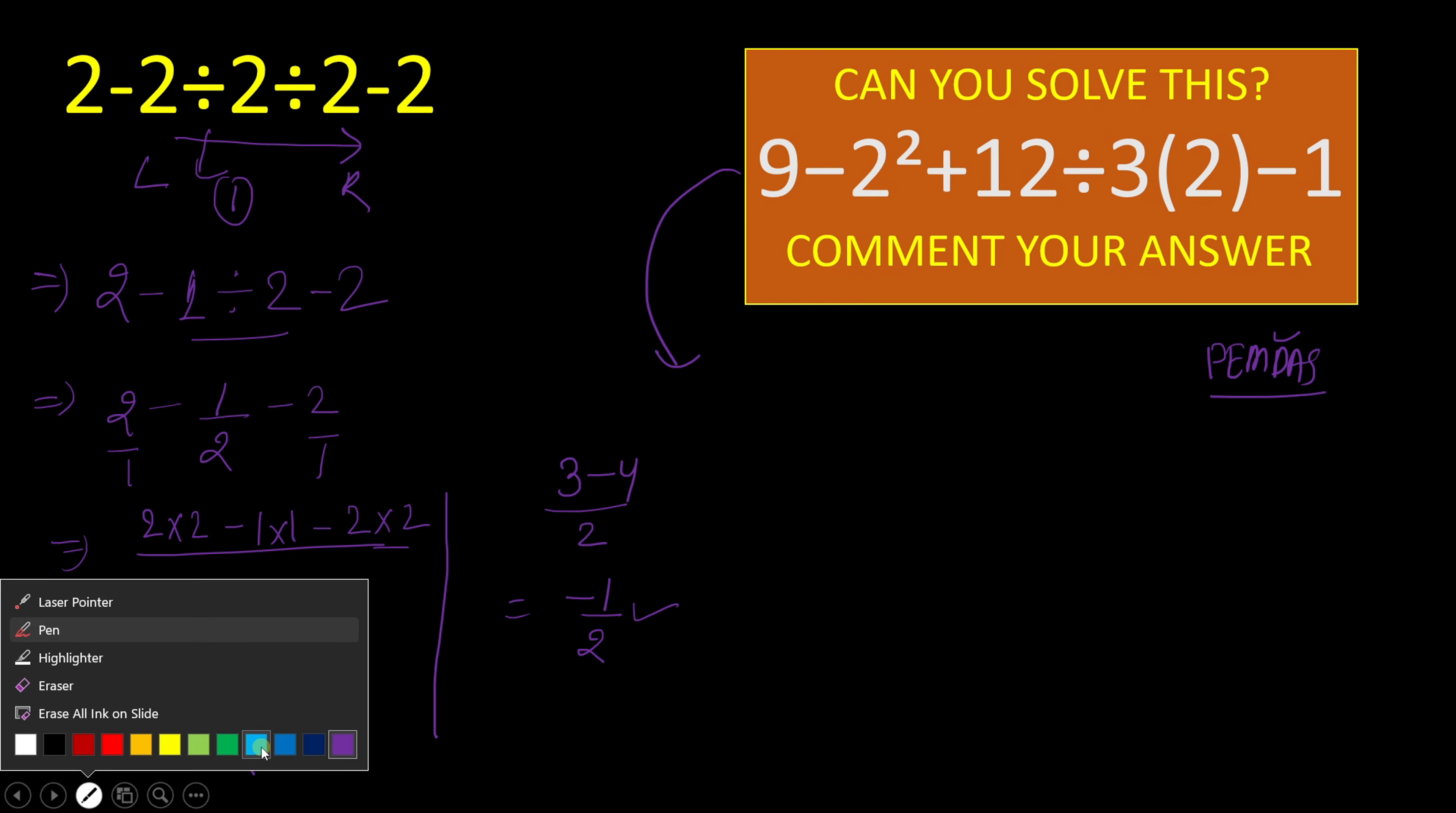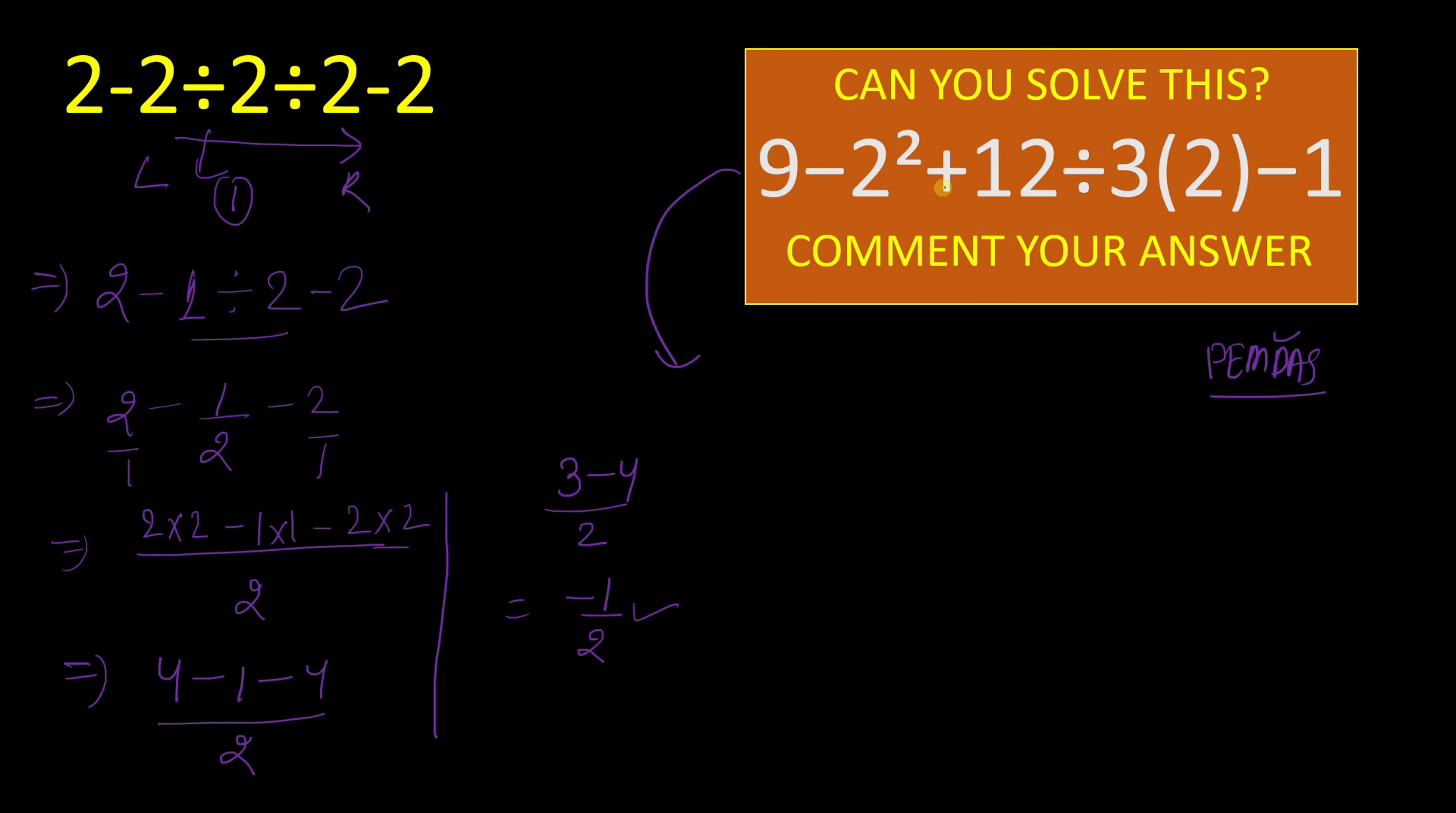We have 9 minus 2 squared plus 12 divided by 3 times 2 minus 1. So first we will solve for this parenthesis part.